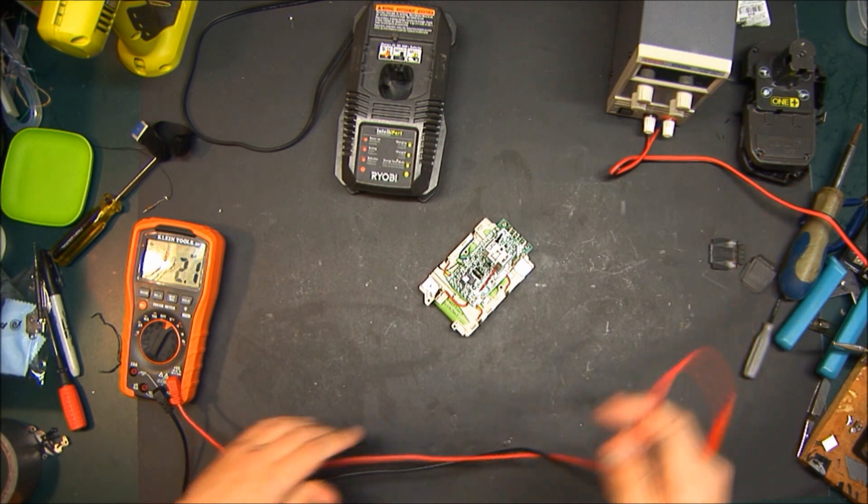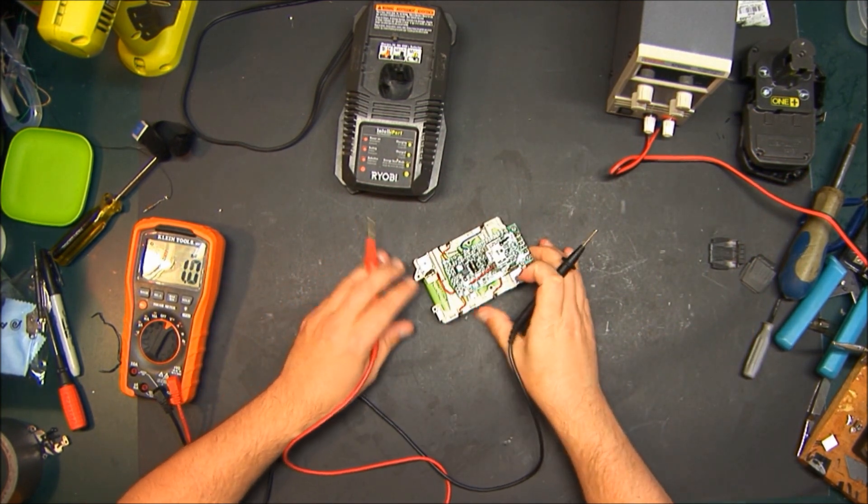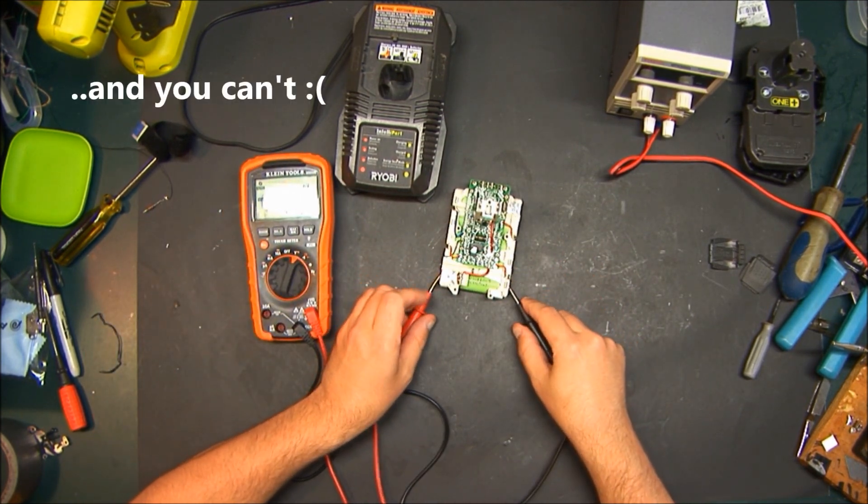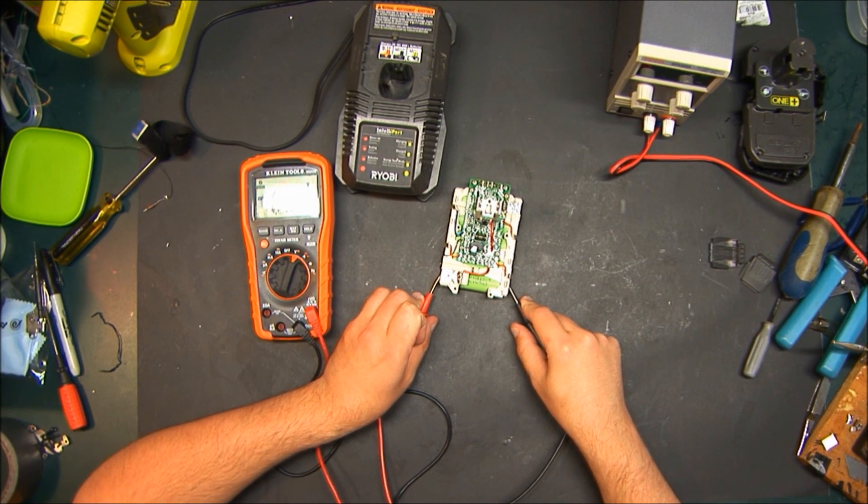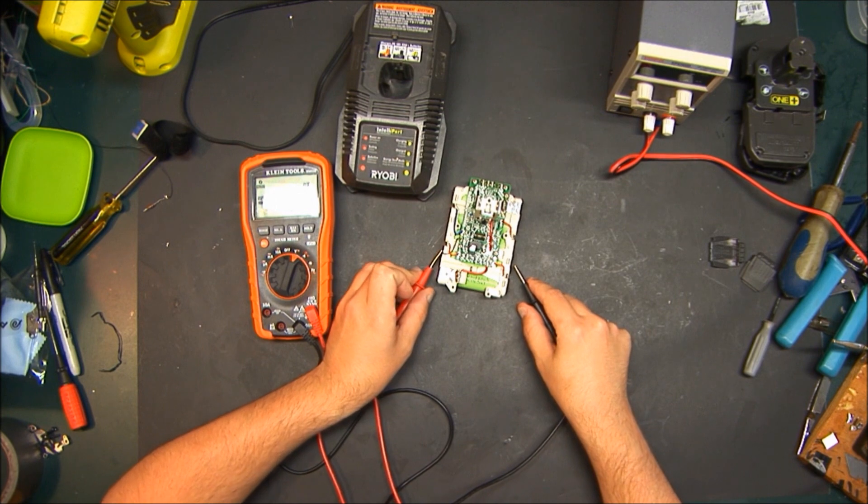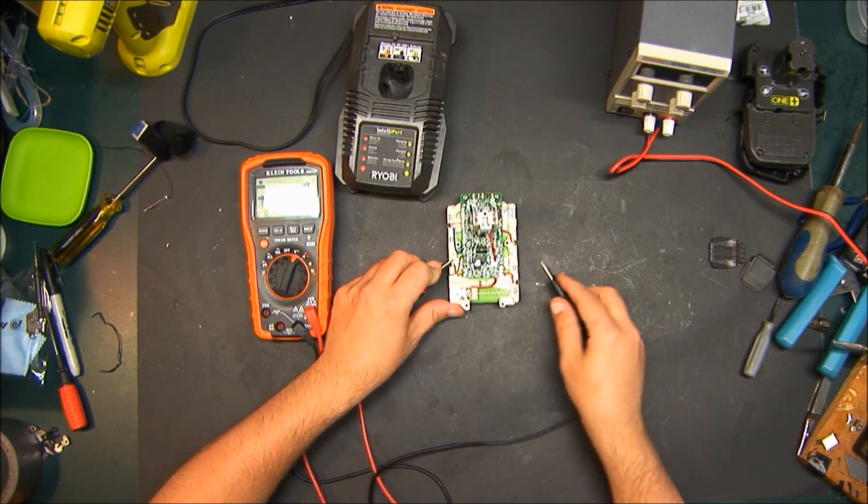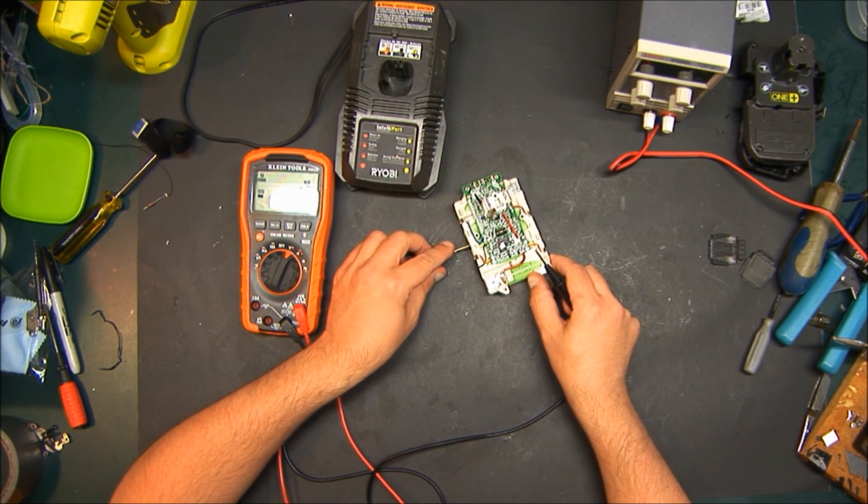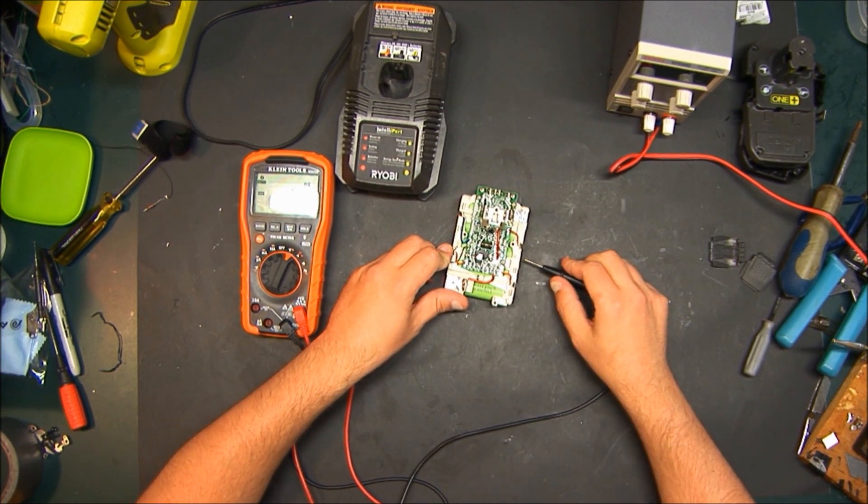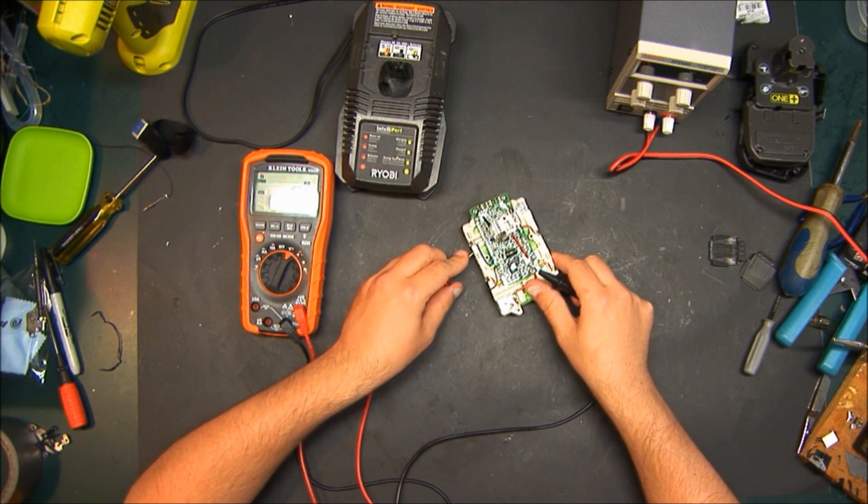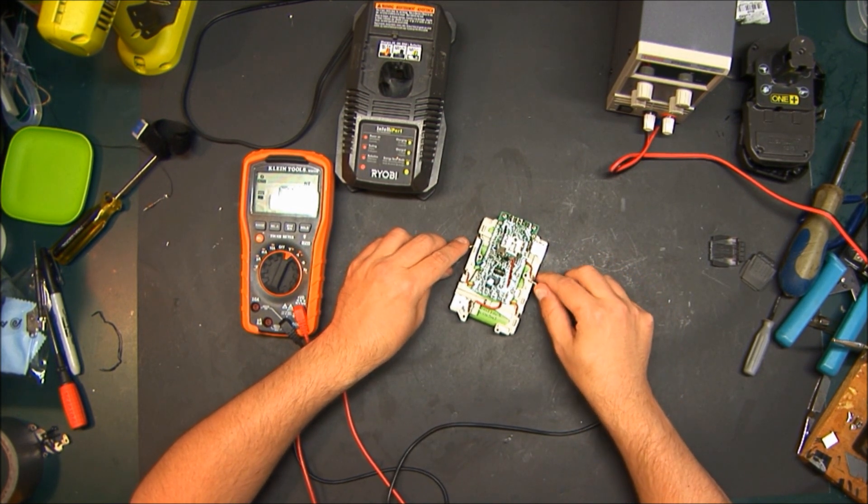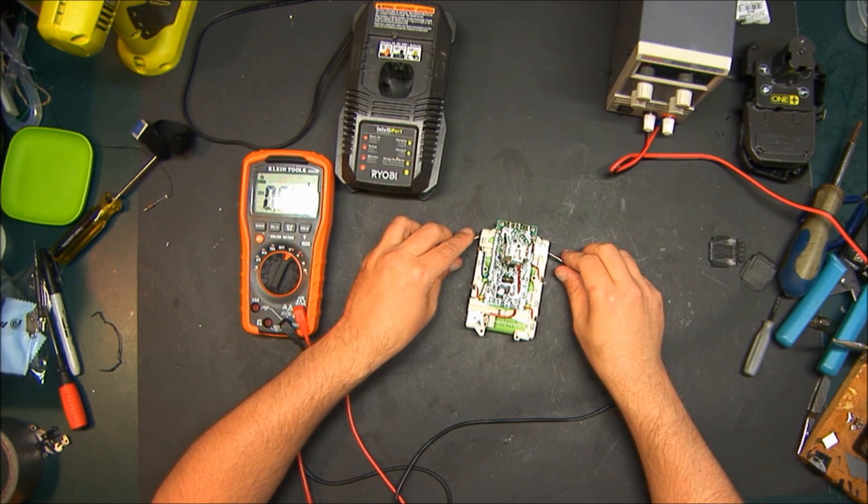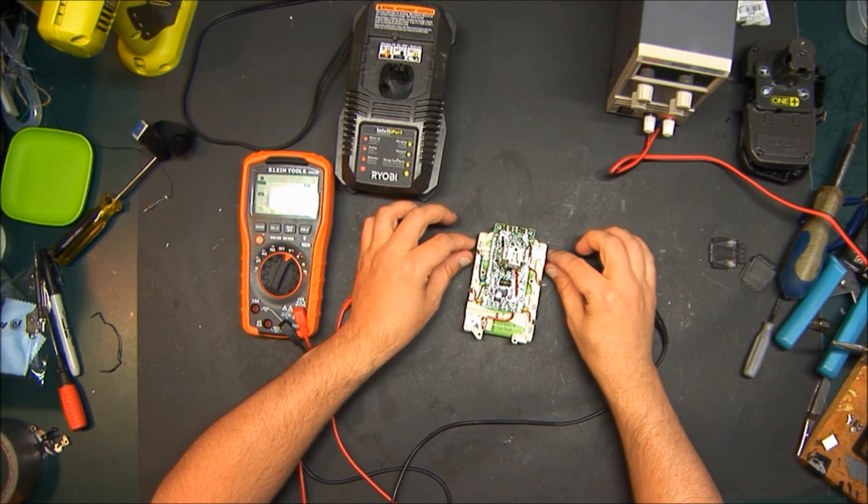What we're going to do first is test each of these cells. That is 1.6 volts. This one, let's go to the next one, 1.1. We'll go to this, go to the next, 1.0. 0.6. That's 0.5. So these last two cells have really dropped.